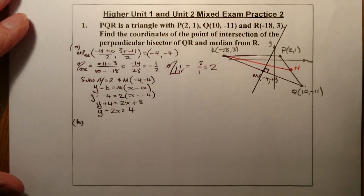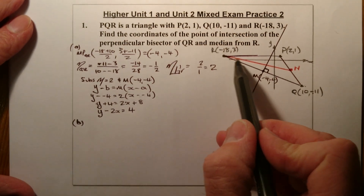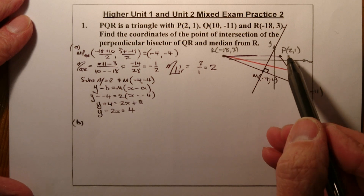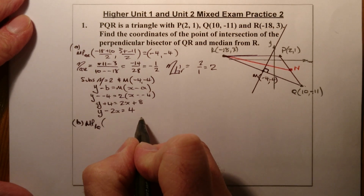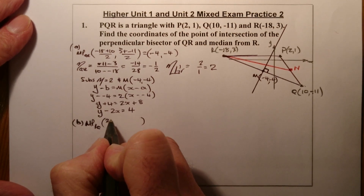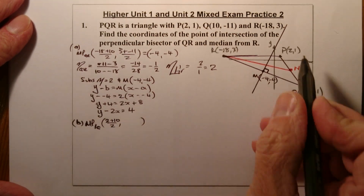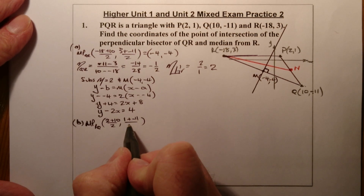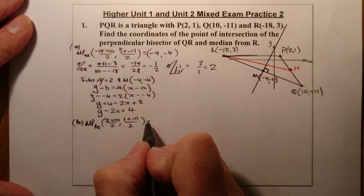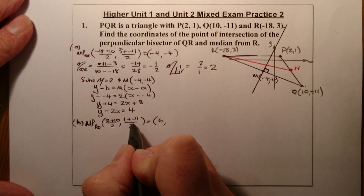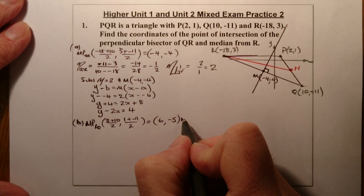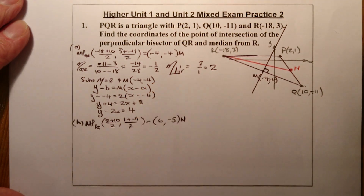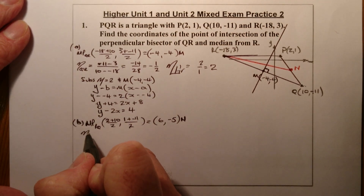The median goes from R to the midpoint of PQ. The midpoint of PQ: x is (2 + 10)/2 = 6, y is (1 + (-11))/2 = -5. So the midpoint N is at (6, -5). I'll now find the gradient from R to N.